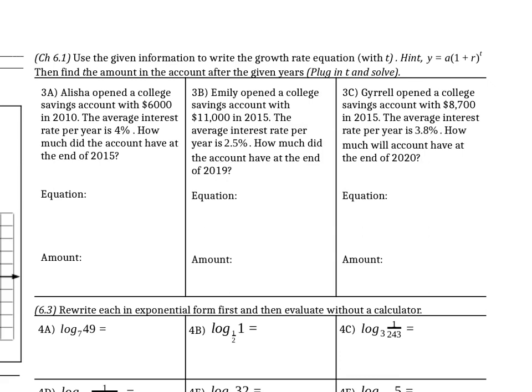Here we're going to use the given information to write the growth rate equation with T. We're using Y equals A times 1 plus R raised to the T. Then we have to find the amount in the account after the given years. So in this example, 3A, Alisha opened a college savings account with $6,000 in 2010. So we're using this equation, A equals $6,000. And then the average interest rate is 4%. So that's 4%. Remember to convert that, you divide by 100 or move the decimal places left two times. So our rate is actually 0.04.